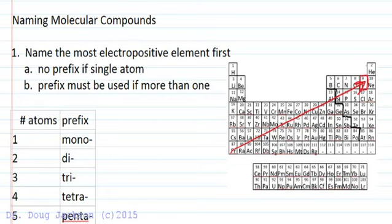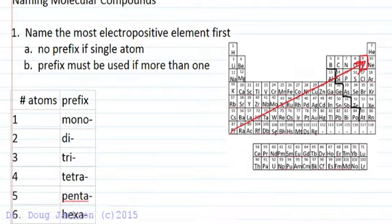If we name the most electropositive element first, we're not going to put a prefix if it's a single atom. However, we must use a prefix if there's more than one.